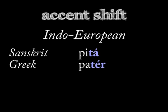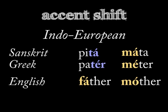One more change: if the way a language accents syllables changes over time, it's called an accent shift. Early Indo-European languages stressed different syllables in different words, which shows up in how Sanskrit and Greek accent the last syllable in 'pita' or 'pater', but the first syllable in 'mata' or 'meter'. Germanic languages like English have fixed the stress accent to the first syllable, which explains why the English equivalents — 'father' and 'mother' — are both stressed on the initial syllable.